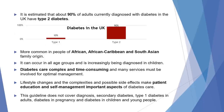It is estimated that about 90% of adults currently diagnosed with diabetes in the UK have type 2 diabetes. Type 2 diabetes is more common in people of African, African Caribbean and South Asian family origin. It can occur in all age groups and is increasingly being diagnosed in children. Multiple vascular risk factors and complications make diabetes care complex and time-consuming, and many services must be involved for optimal management. Necessary lifestyle changes and the complexities of possible side effects of therapy make patient education and self-management important aspects of diabetes care.